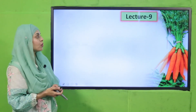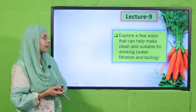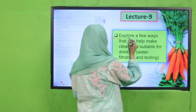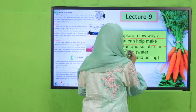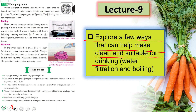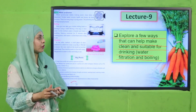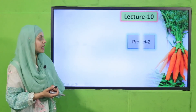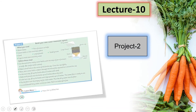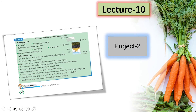In Lecture Number 9, students will be able to explore a few ways that can help make clean and suitable drinking water, like water filtration and boiling. We will suggest some methods by which water is purified — how we can make dirty water clean using boiling and filtration methods. The page that will be read is page number 48.